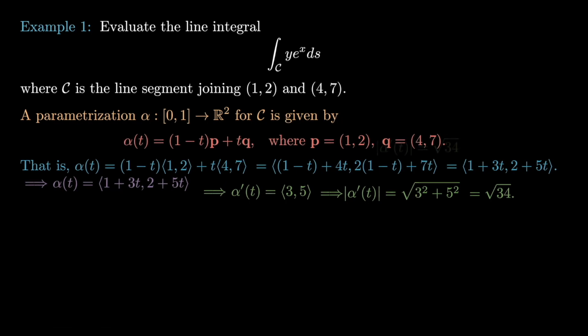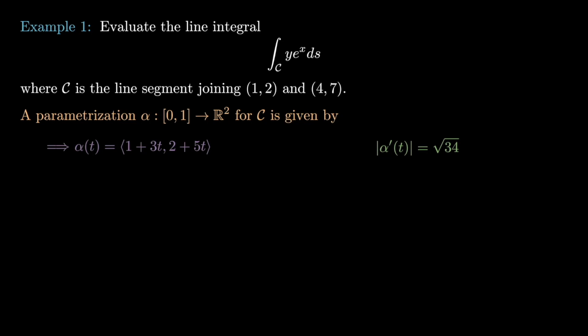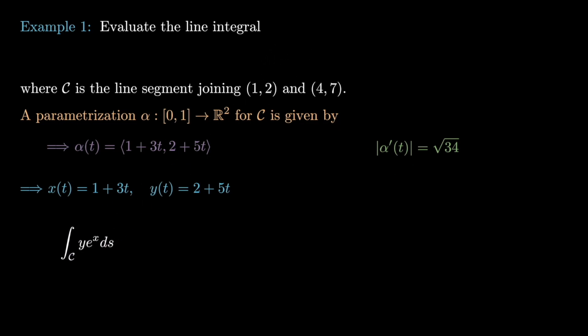To evaluate the line integral, we write each variable in the original expression in terms of the parameterization: x(t) = 1+3t and y(t) = 2+5t. The integral over C of y·e^x ds becomes the integral from 0 to 1 of (2+5t)·e^(1+3t) scaled by the length of the tangent vector, √34. This is now an ordinary Riemann integral in the parameter t.